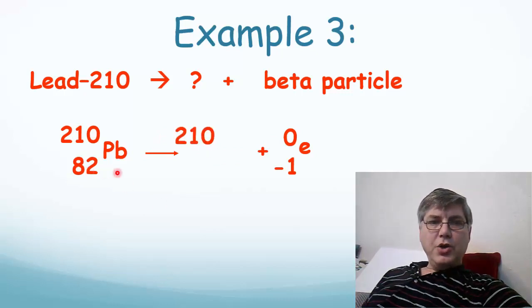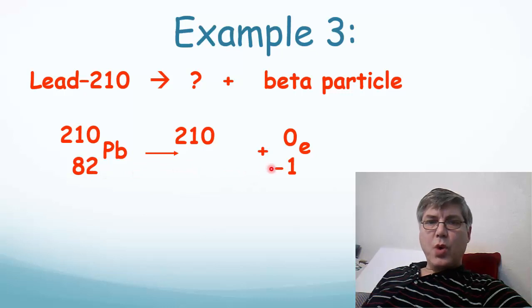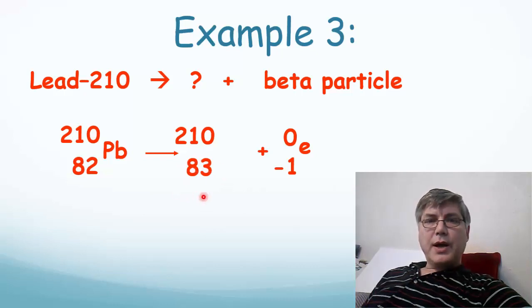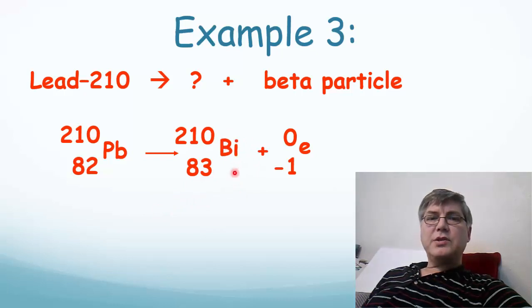82 is equal to something minus 1. So what's the something down here? 83. Now we can just look up 83 on our periodic table and we'll find out what element symbol goes right here. And if we find 83, we'll see that it's bismuth.